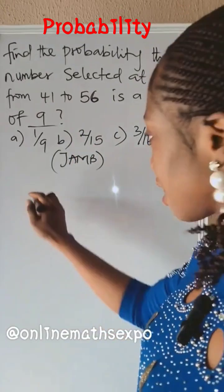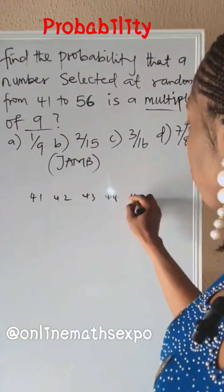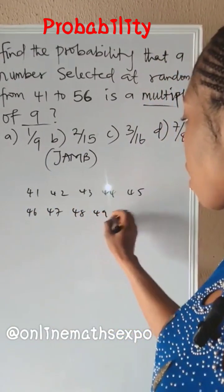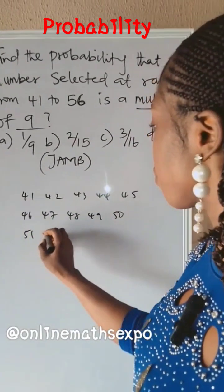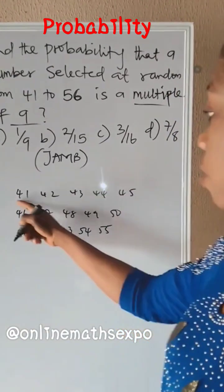Then from 41 to 56, let's get them. We have 41, 42, 43, 44, 45, 46, 47, 48, 49, 50, 51, 52, 53, 54, 55. We have got, we see this.